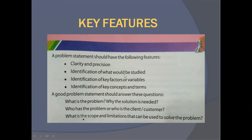The second key feature is identification of what would be studied — we need to identify what should be done in the problem statement and how to approach solving it using the problem-solving process. The third key feature is identification of key factors and variables. We identify which factors are present in the problem and which factors change — those changing factors are the variables.